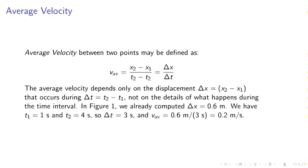Average velocity between two points may be defined by v average equals x2 minus x1 divided by t2 minus t1, equals delta x over delta t. The average velocity depends on the displacement, delta x, that occurs during delta t, not in the details of what happens during the time interval. In figure 1, we've already computed delta x, so we have v average equals 0.6 meters divided by 3 seconds equals 0.2 meters per second.